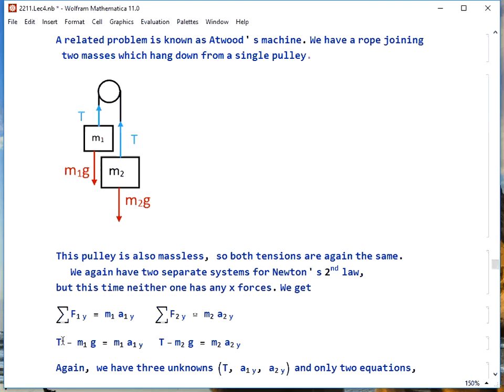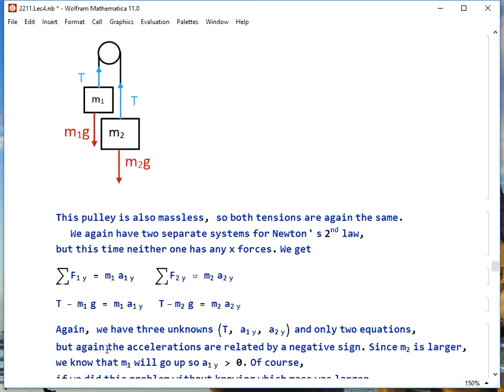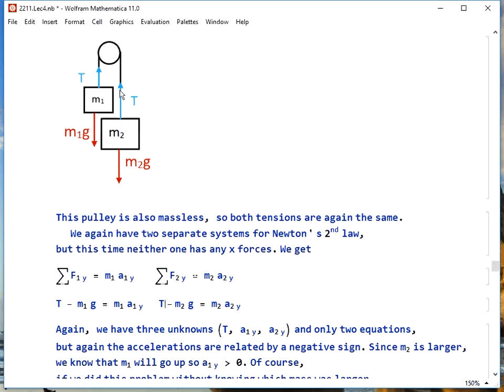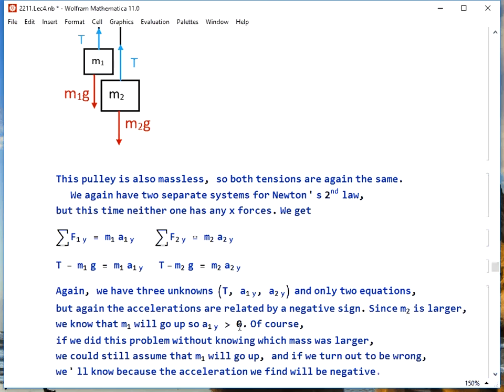The tensions are the same for both masses for the same reason as before that we have a massless pulley. But again, we have three unknowns, T, a1y, and a2y, and only two equations. We're going to fix it the same way as before because the accelerations are again related by a negative sign. m2 is larger the way I've set this up, so we know that m1 will go up. So it makes sense to let a1y be equal to a, and then a2y will be the negative of that.